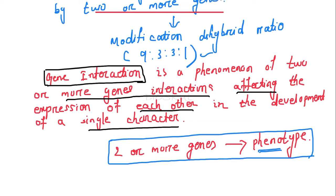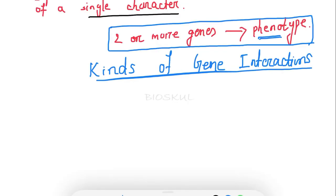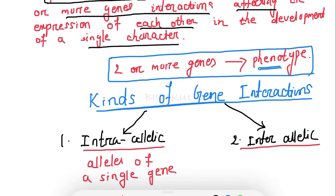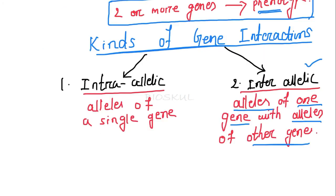In living organisms, most characters are actually controlled by combinations of several genes. There are two kinds of gene interactions: one is known as intra-allelic gene interaction, and the second is known as inter-allelic gene interaction. Intra-allelic gene interaction is the gene interaction between the alleles of a single gene. Inter-allelic gene interaction is the genetic interaction between the alleles of one gene with alleles of another gene.